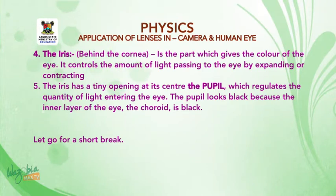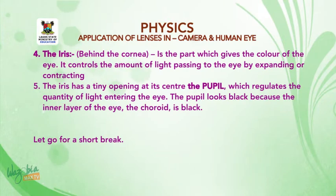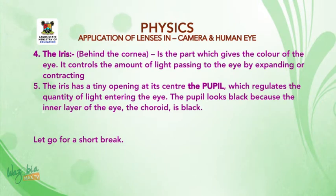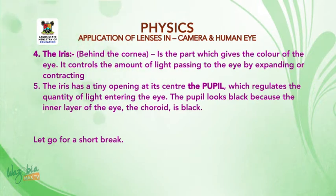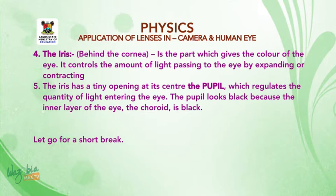Number four: the iris, behind the cornea, is the part which gives the color of the eye. It controls the amount of light passing to the eye by expanding or contracting. Number five: the iris has a tiny opening at its center called the pupil, which regulates the quantity of light entering the eye. The pupil looks black because the inner layer of the eye, the choroid, is black.